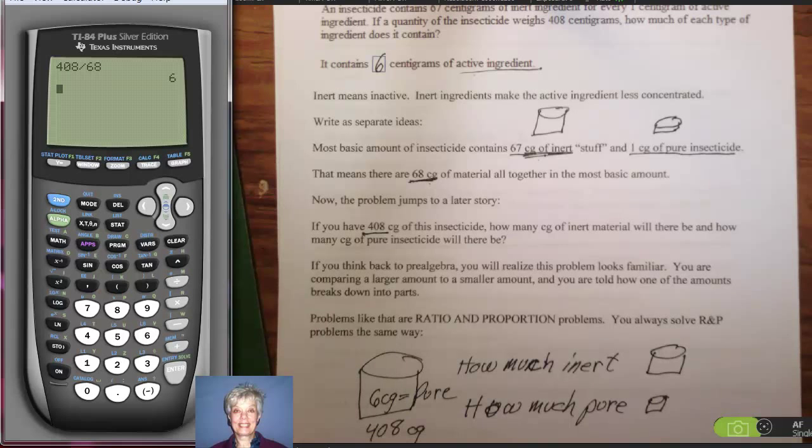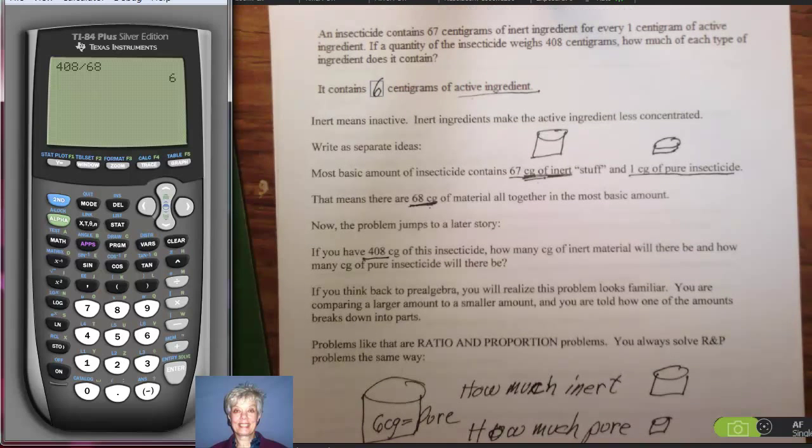So we are going to have 6 centigrams of the active ingredient. Now, how do we do this? We said, okay, I've got this small batch of insecticide. 67 grams of it are inert, and 1 centigram is active. Altogether, there are 68.